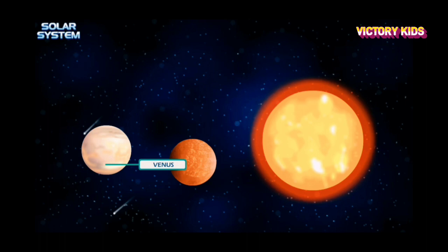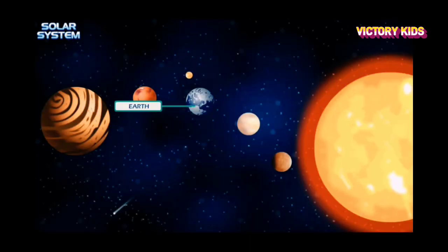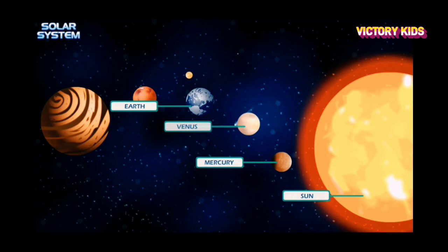Venus is the hottest planet of the solar system. Earth is the planet where we live. Earth is the third planet from the sun, after Mercury and Venus.